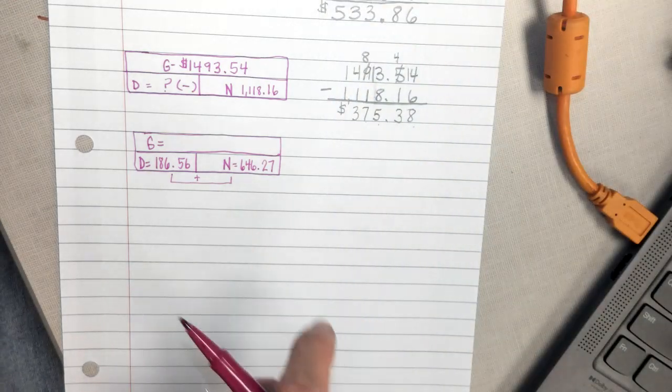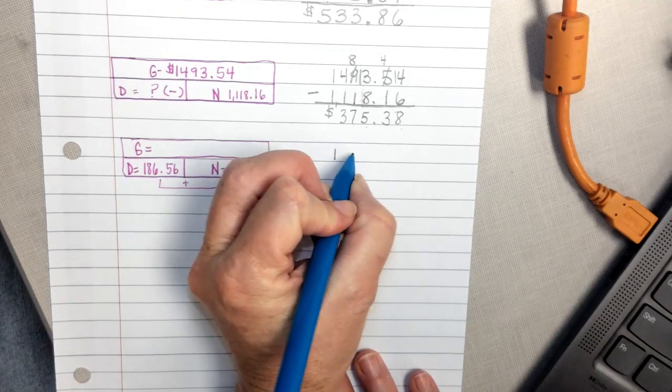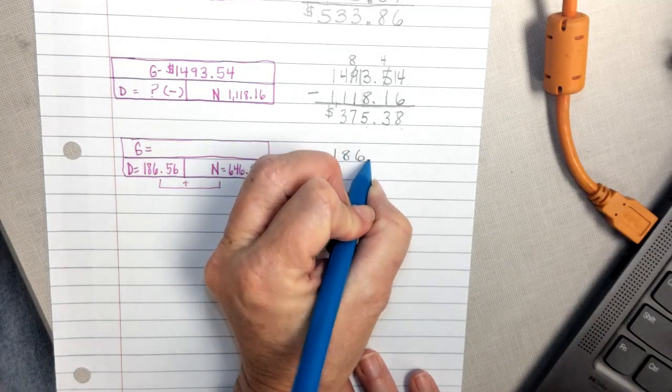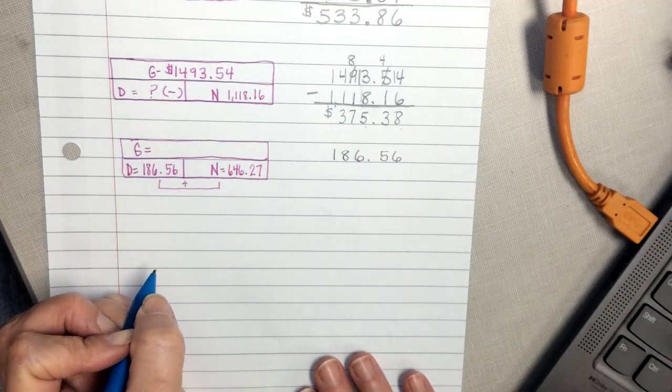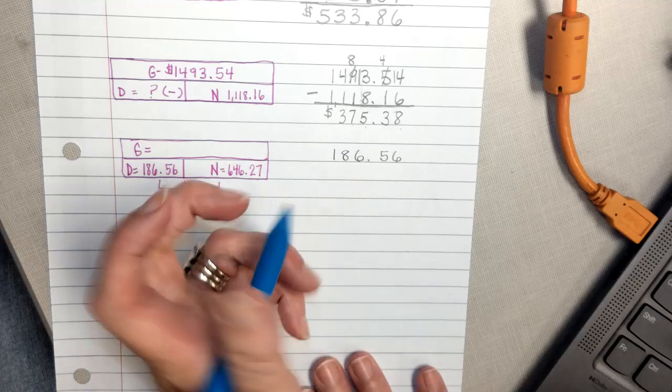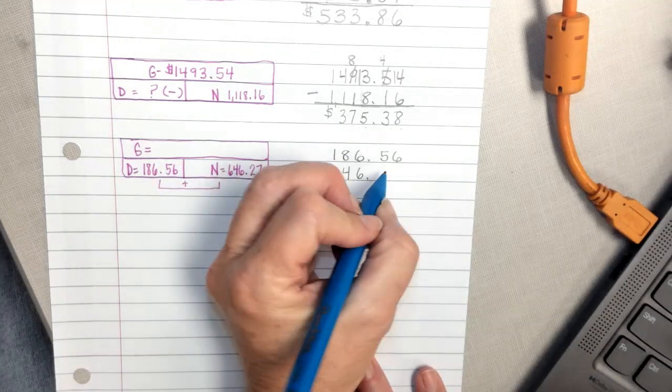So slide that information over to the right. Set it up, $186.56. Make sure you're writing big enough so it fits on the line. $646.27.